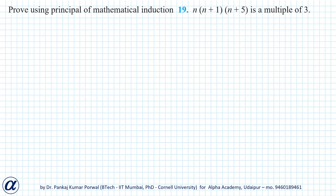In this question, we have to prove using the principle of mathematical induction that n(n+1)(n+5) is a multiple of 3.